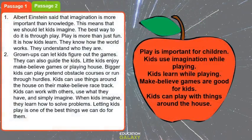Passage number one is about play — how play is important for children. The very last line says letting kids play is one of the best things we can do for them. It focuses on imagination and play. In the second paragraph, it talks about how kids can use imagination to play and shows how grown-ups can help kids. It says kids learn while playing, and in the first paragraph it says play is more than fun — it is how kids learn.